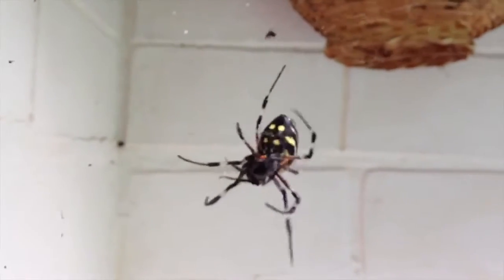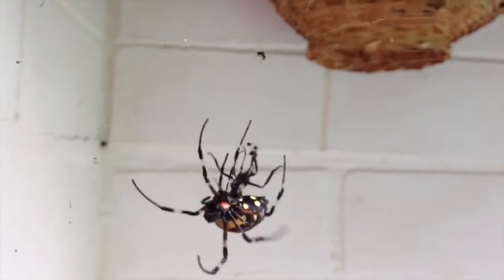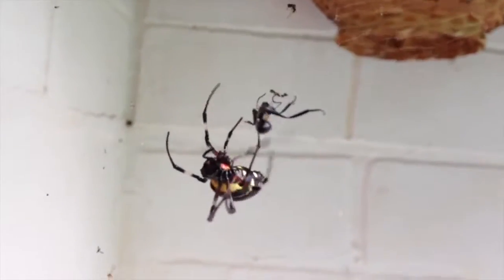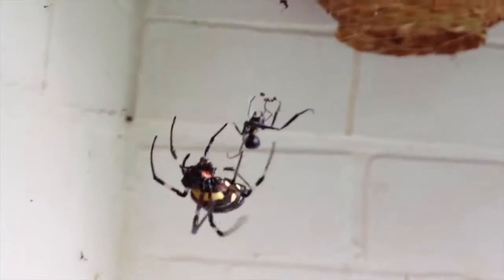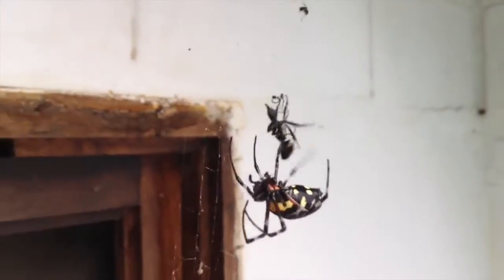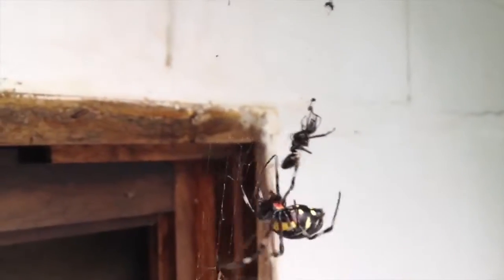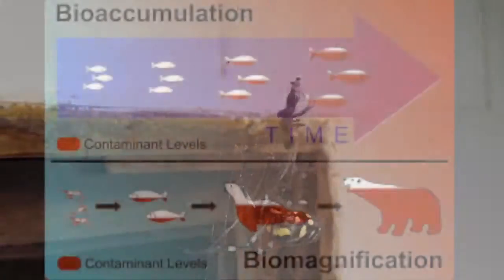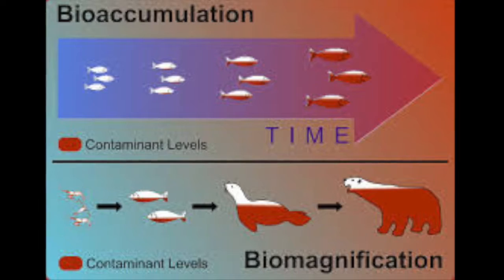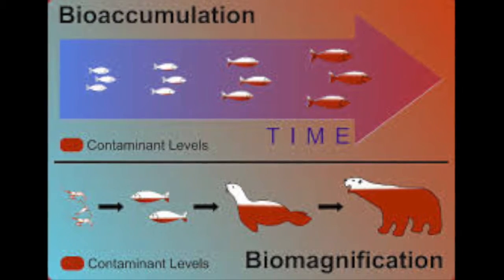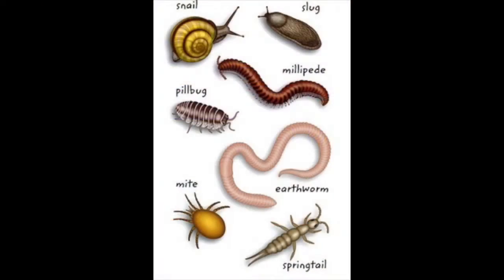Next, a secondary consumer will eat the primary consumer, and with that, ingests the harmful compound that the primary consumer previously ate. At this point, the parts per million of that substance has now grown. This process goes on to affect every single organism in the food chain, including decomposers.